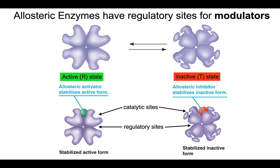There are inhibitors, which are modulators that stabilize the inactive state of the enzyme — when an inhibitor binds to the regulatory site it shuts down the catalytic site from properly functioning. This is opposed to modulators called activators, shown in green, which also bind to a regulatory site but stabilize the active form of the enzyme. Some enzymes have even more complex arrangements with multiple regulatory sites bound by different modulators.